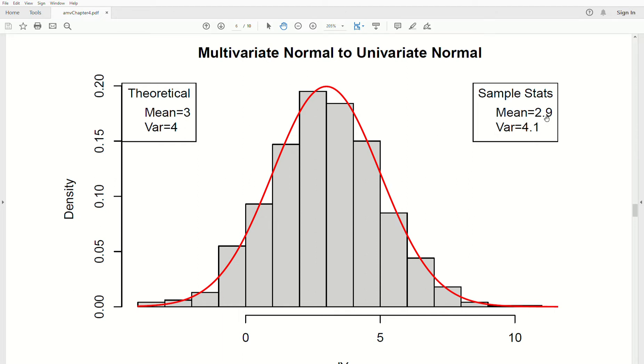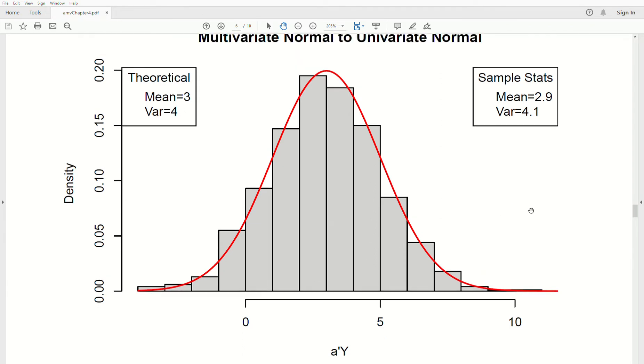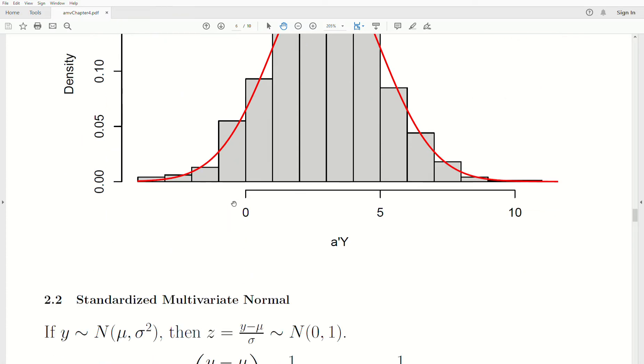So the sample or the empirical results, the sample results agree with the theoretical results. The mean is 2.9, which is pretty close. Variance is 4.1, which is pretty close. And the larger the sample size we create, of course, these sample results will approach the theoretical results.